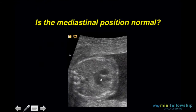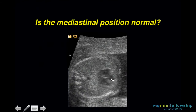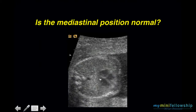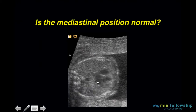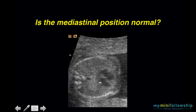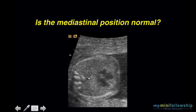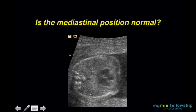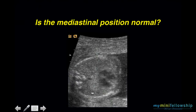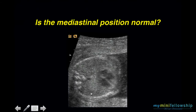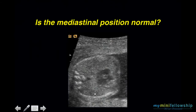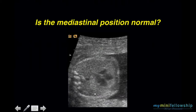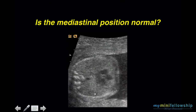Spine, descending aorta, left atrium, left ventricle, right ventricle, right atrium. It is not until we recognize that the left atrium and the descending thoracic aorta are separated that we actually have a fighting chance to recognize the small sequestration that has interposed itself between the aorta and the left atrium, causing an anterior mediastinal shift.